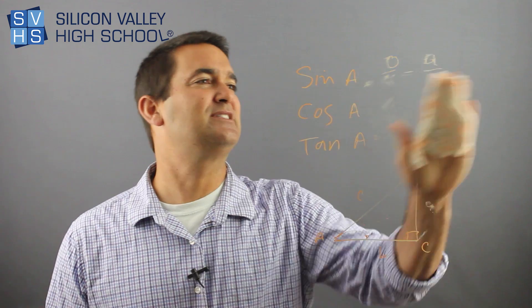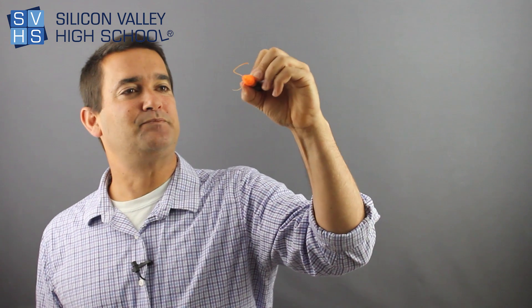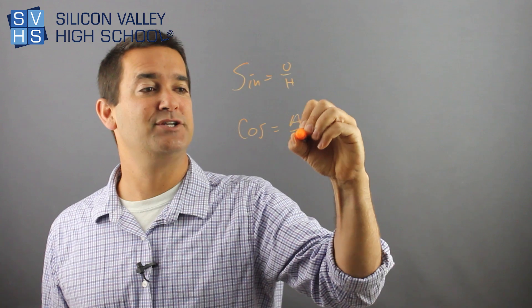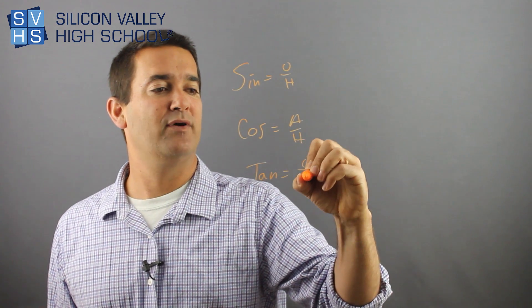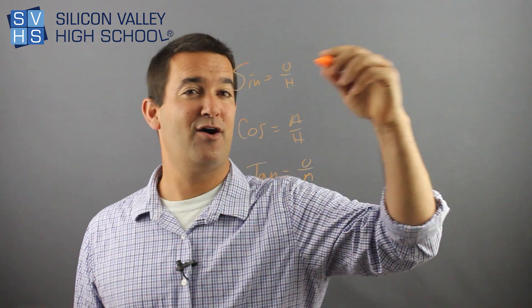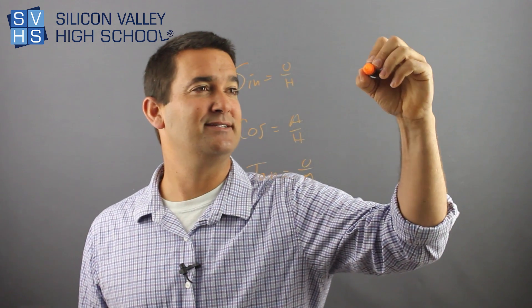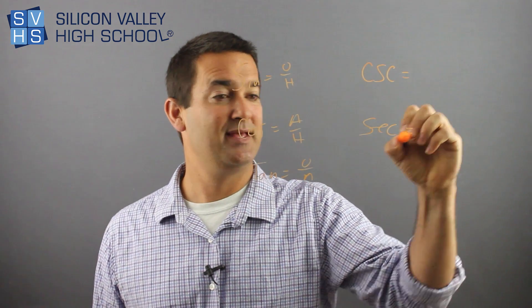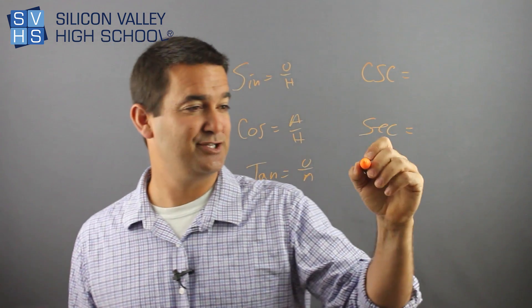I started this whole thing asking about the six trigonometric functions. I recommend you find the first three, and then the other three are just the reciprocals. Sine is O over H, cosine is A over H, tangent is O over A. The other three: the reciprocal of sine is cosecant, the reciprocal of cosine is secant, and the reciprocal of tangent is cotangent.